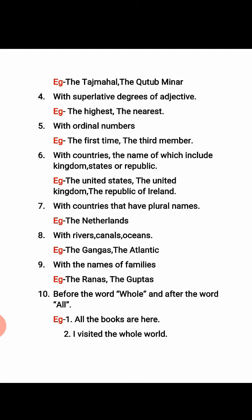With countries that have plural names — for example: the Netherlands, where plural is indicated, so we use THE. With rivers, canals, oceans: the Ganga, the Atlantic. With the name of families — before a family name we also use THE. For example: the Ranas, the Guptas. Before the word 'whole' and after the word 'all' — for example: all the books are here; I visited the whole world.